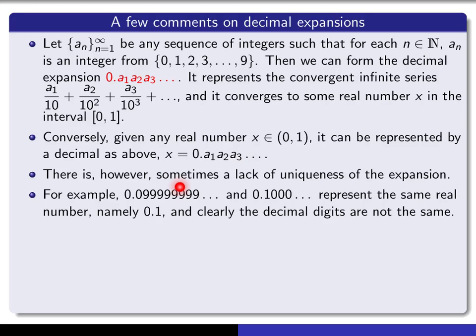The catch is that some real numbers between 0 and 1 have more than one decimal expansion. For example, if you add up this particular geometric series here, you'll discover that it adds up to the number 0.1. So here you see we've got two different decimal expansions. The digits are not the same, but they represent the same real number between 0 and 1.